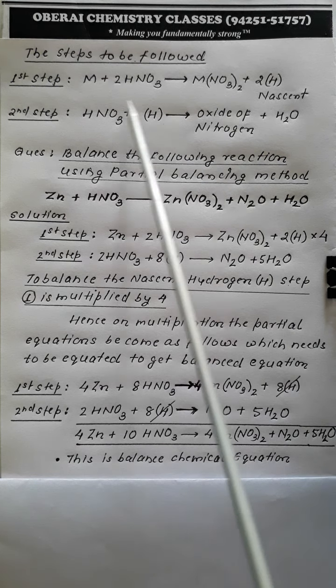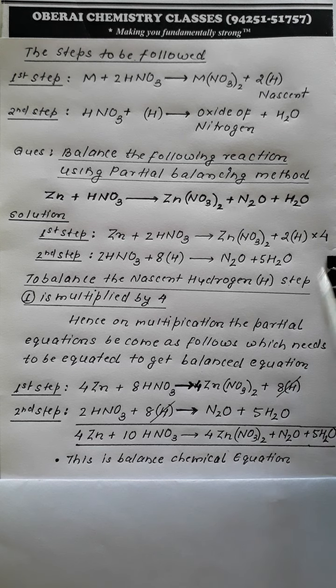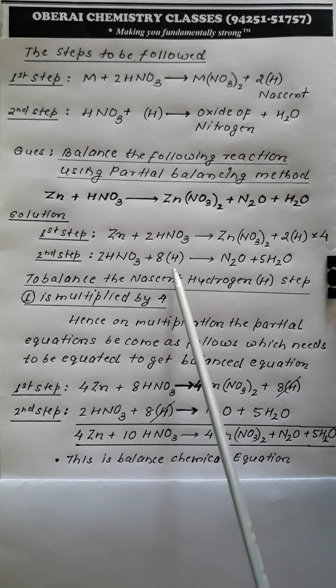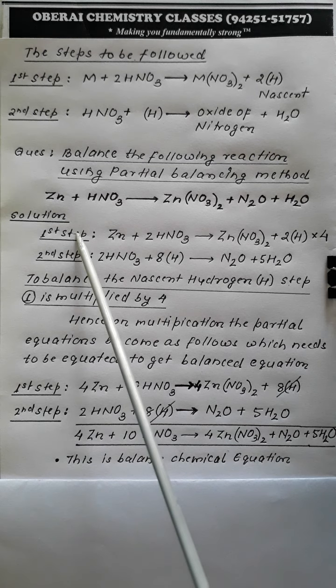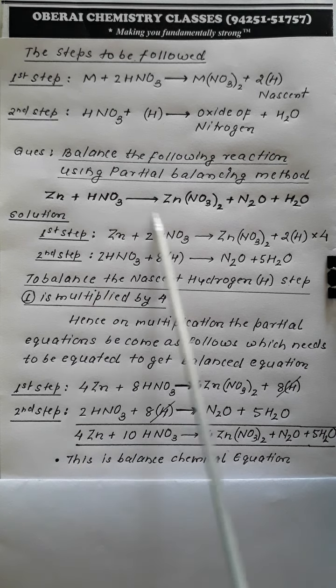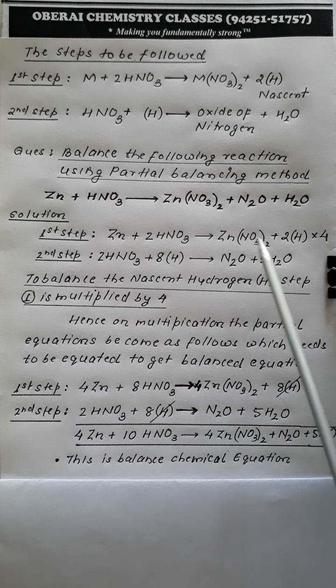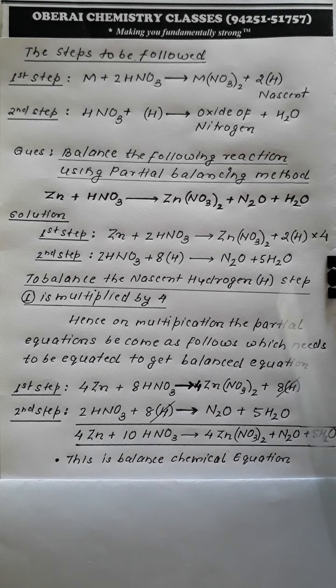The balanced second step is: 2HNO3 + 8[H] → N2O + 5H2O. The balanced first step is: Zn + 2HNO3 → Zn(NO3)2 + 2[H]. So we have divided the skeletal reaction into two steps — one producing zinc nitrate and one producing nitrous oxide and water — and individually balanced each partial step.